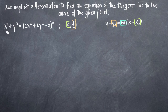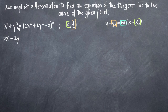We'll take the derivative one term at a time. The derivative of x² will simply be 2x. The derivative of y², however, will be 2y — just as if y were the x variable — but because we're taking the derivative with respect to x and we have a y variable involved, we have to multiply our result by y prime. The easiest way to remember this is that whenever you take the derivative of something that involves y, you have to multiply by y prime.